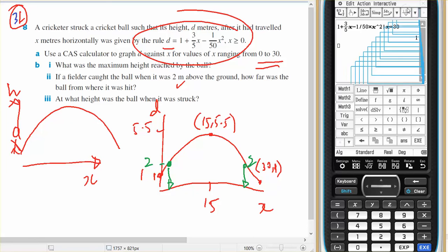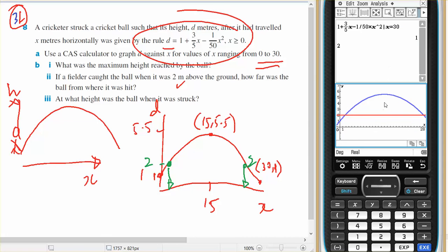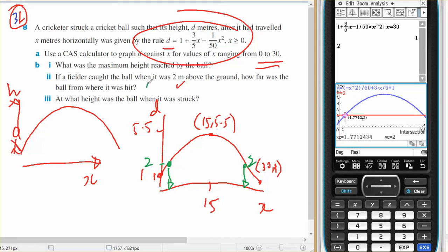So if I bring up my graph again and I put in 2, and I drag and drop 2, I can see that there are 2 times. If I go analysis, G-Solve intersection, one of them is at 1.77, and the other one is at 28.23, rounded to 2 decimal places.